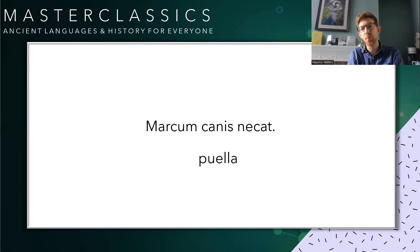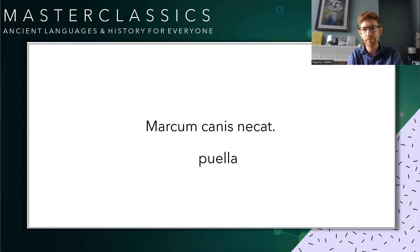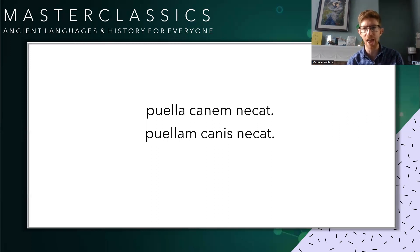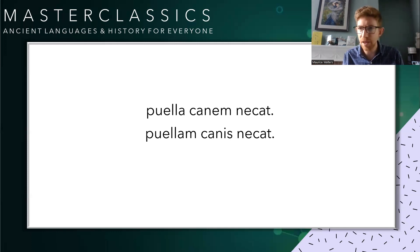Now think about putting the word puella into that sentence for 'girl'. You can make it the girl killing the dog, or Marcus killing the girl — your choice. Puella canem necat: 'the girl kills the dog' — the dog has the accusative ending. Puellam canis necat: 'the dog kills the girl' — because puella now has its 'm' on the end. We actually do the same thing in English with 'he' and 'him': 'he shot the bird' versus 'the bird shot him'.